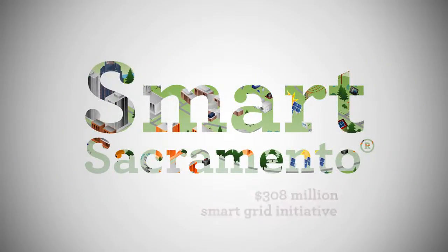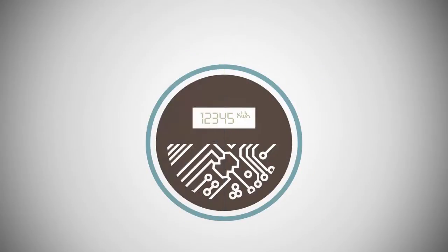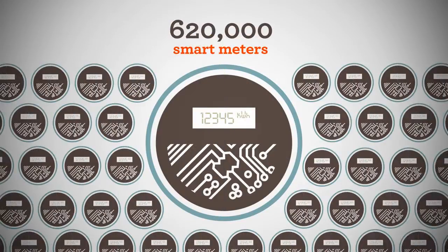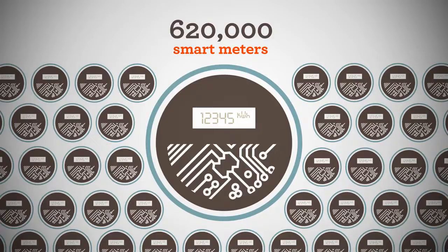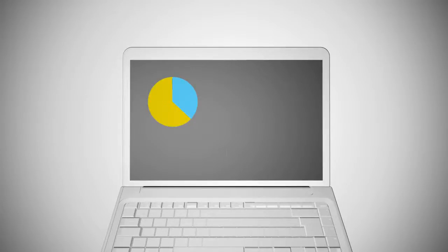It includes 50 unique projects impacting all areas of the grid. The biggest project under Smart Sacramento was the installation of 620,000 smart meters and supporting infrastructure in the Sacramento area. These smart meters provide customers with tools to better understand and manage their electricity use and costs.